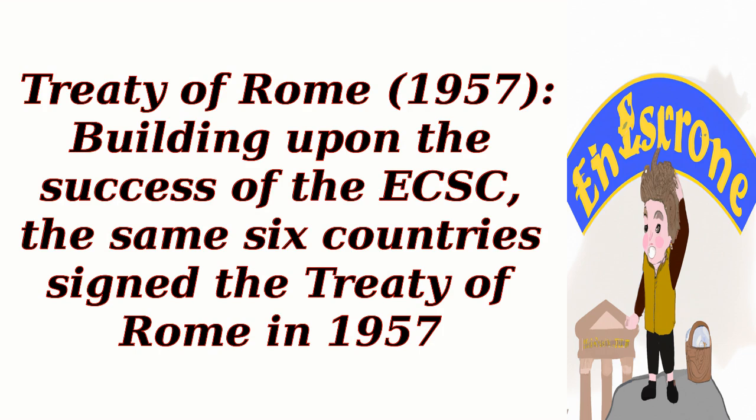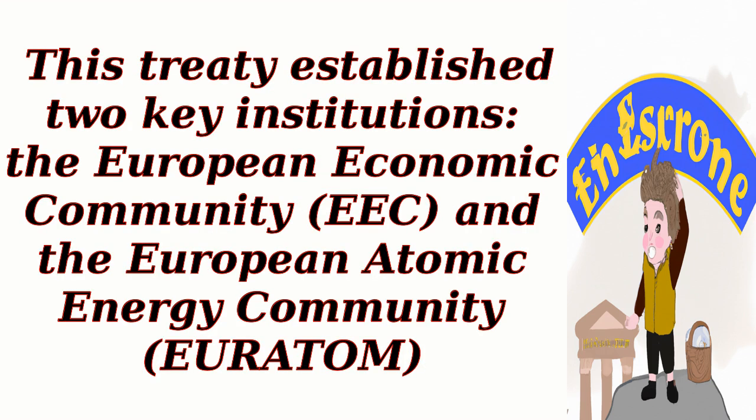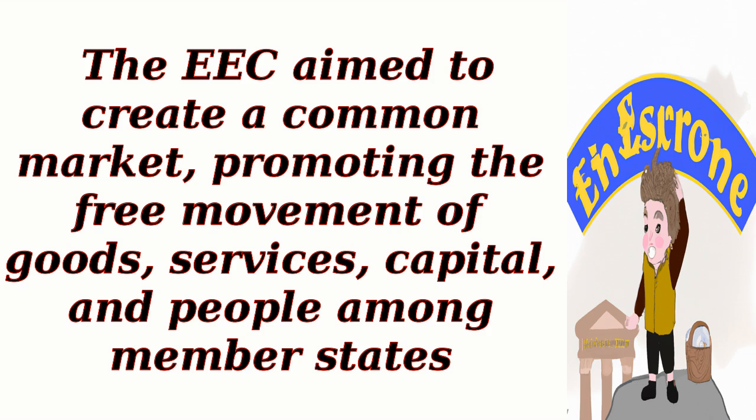Treaty of Rome, 1957. Building upon the success of the ECSC, the same six countries signed the Treaty of Rome in 1957. This treaty established two key institutions: the European Economic Community, EEC, and the European Atomic Energy Community, Euratom. The EEC aimed to create a common market, promoting the free movement of goods, services, capital, and people among member states.